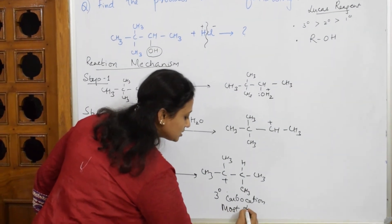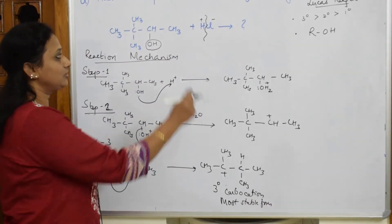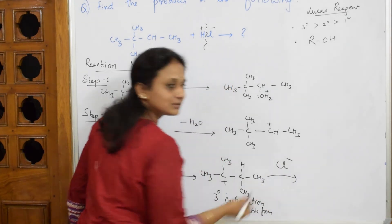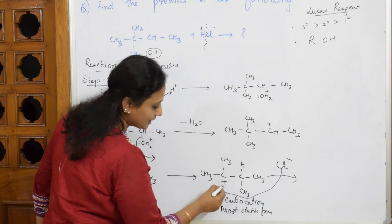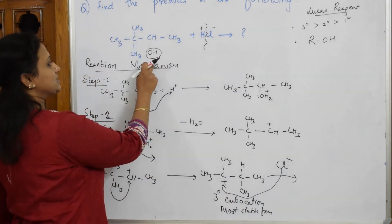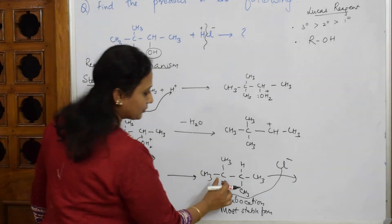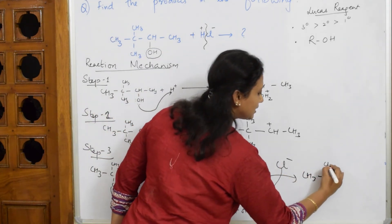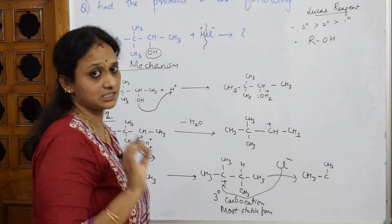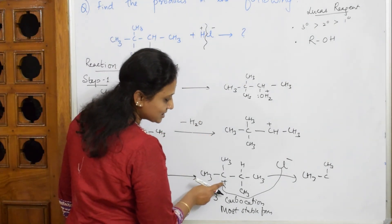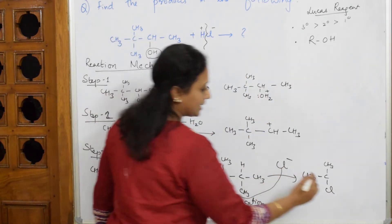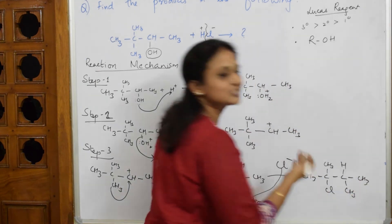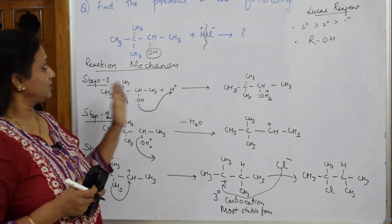Now I have the most stable tertiary carbocation, so in Step 4 the Cl⁻ nucleophile is going to attack this molecule. The Cl⁻ attacks the tertiary carbocation carbon. What happened: the OH was originally here, but after the methyl shift this carbon attained a tertiary carbocation, and now Cl⁻ comes and occupies that carbon. The final compound is: CH₃–C(CH₃)(Cl)–CH(CH₃)–CH₃.